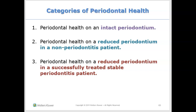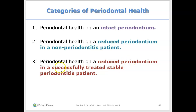If someone has a healthy mouth, there are three categories we can say under periodontal health. They could have periodontal health on an intact periodontium — a mouth with no bone loss. They could have periodontal health on a reduced periodontum in a non-periodontitis patient. Or they could have periodontal health on a reduced periodontum in a successfully treated stable periodontitis patient. Let's look at all of these conditions and understand what they mean.